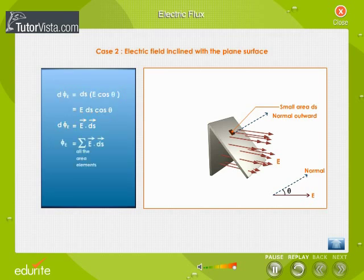Therefore, electric flux for the entire surface is given by the equation φ_E equal to summation vector E dot vector dS. For a closed surface, φ_E is equal to surface integral of vector E dot vector dS.